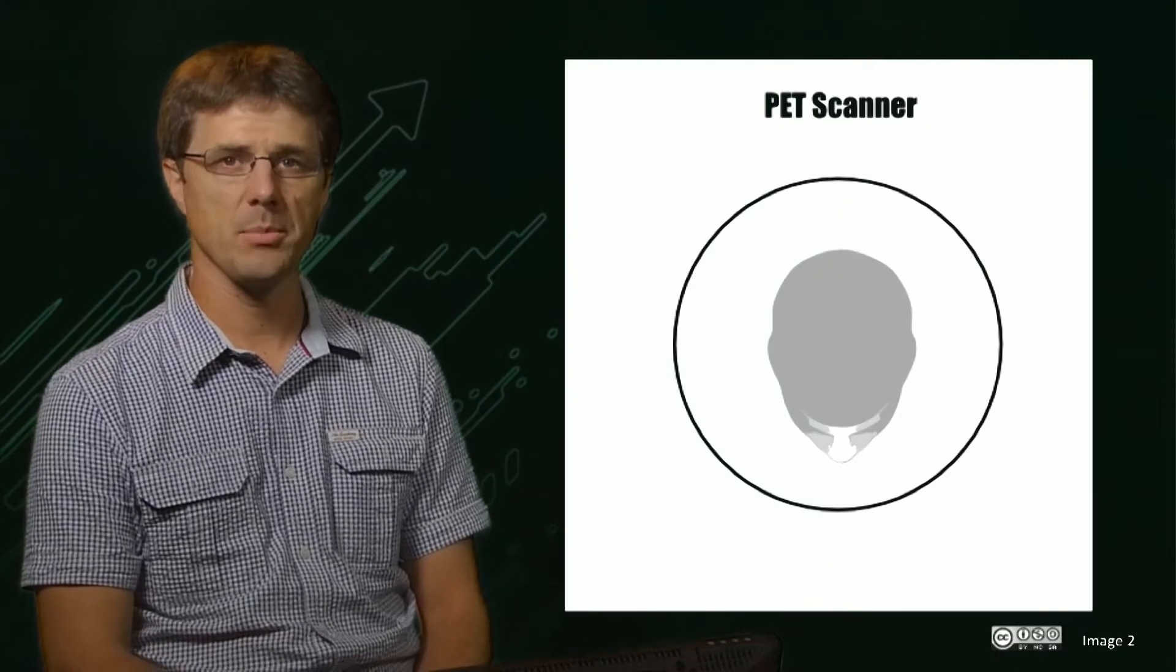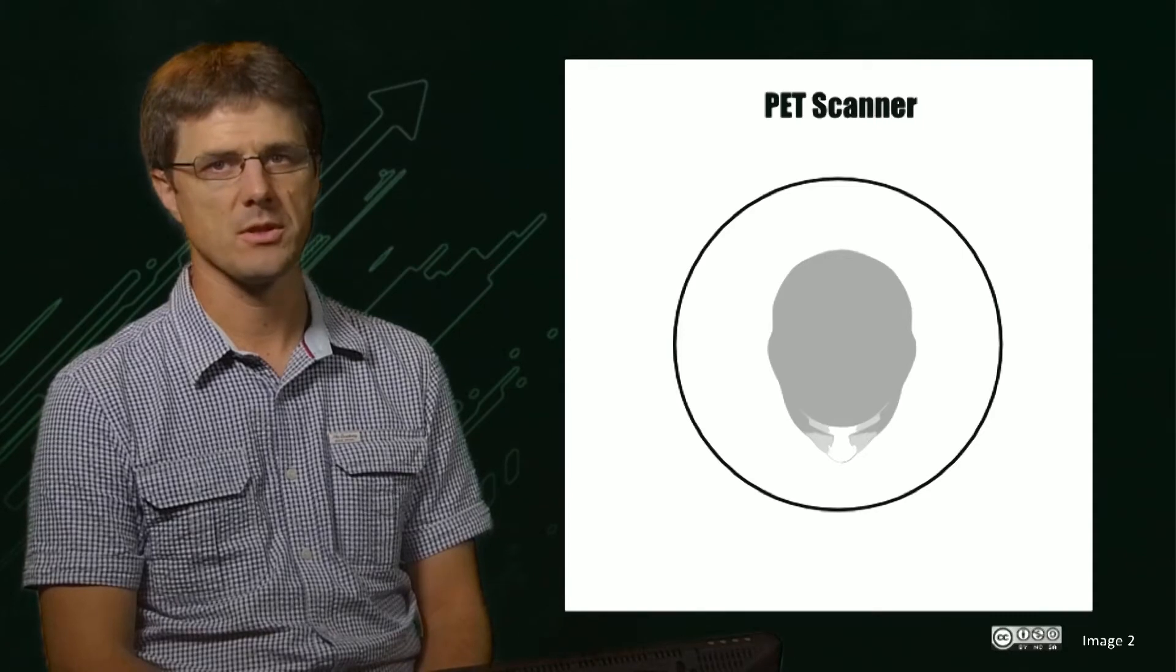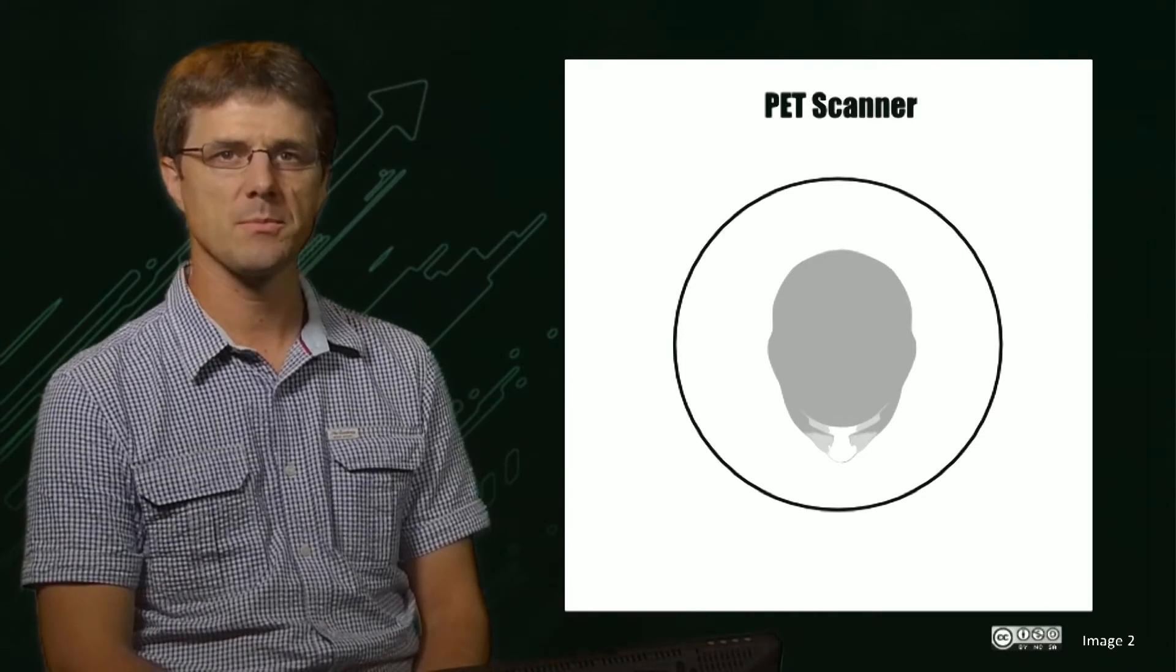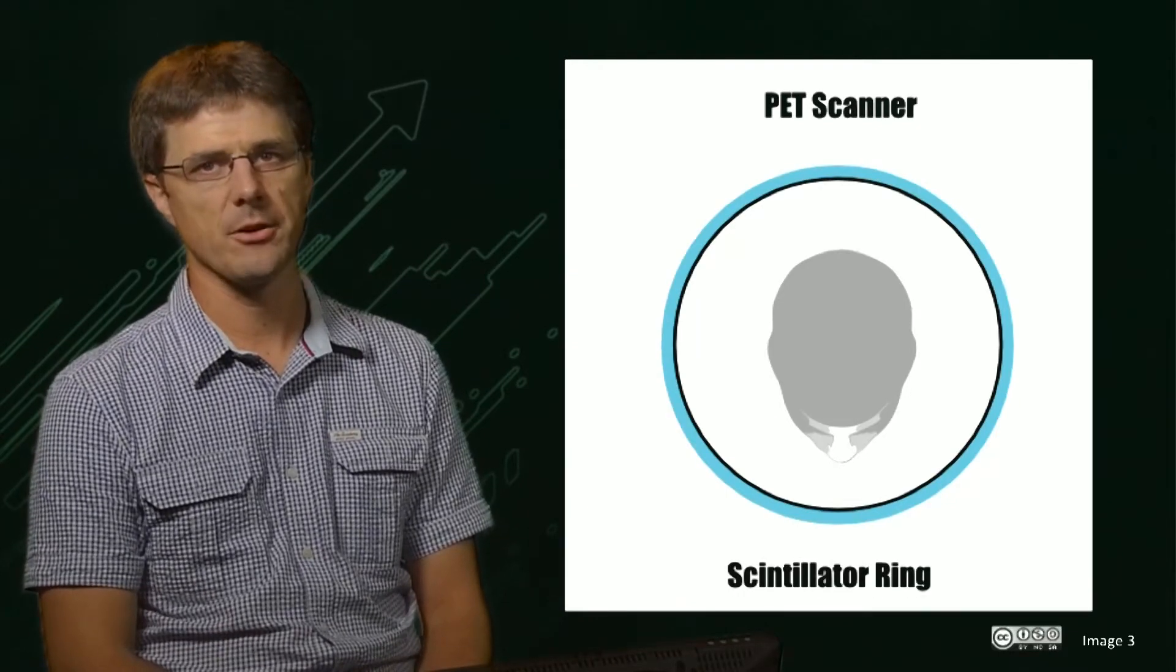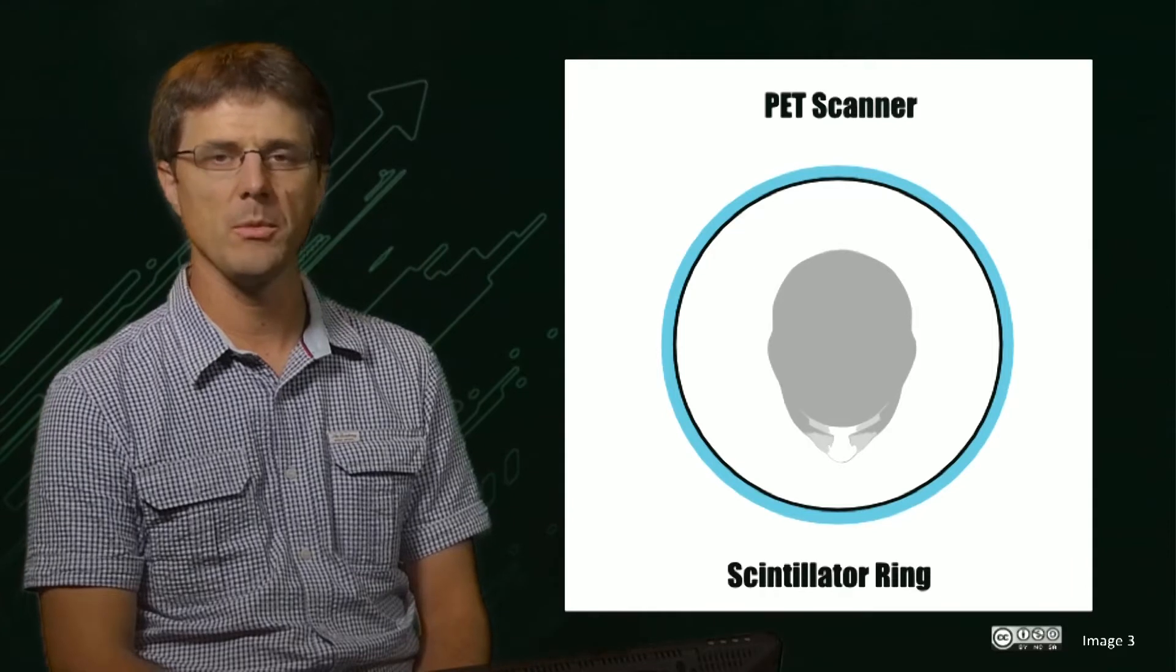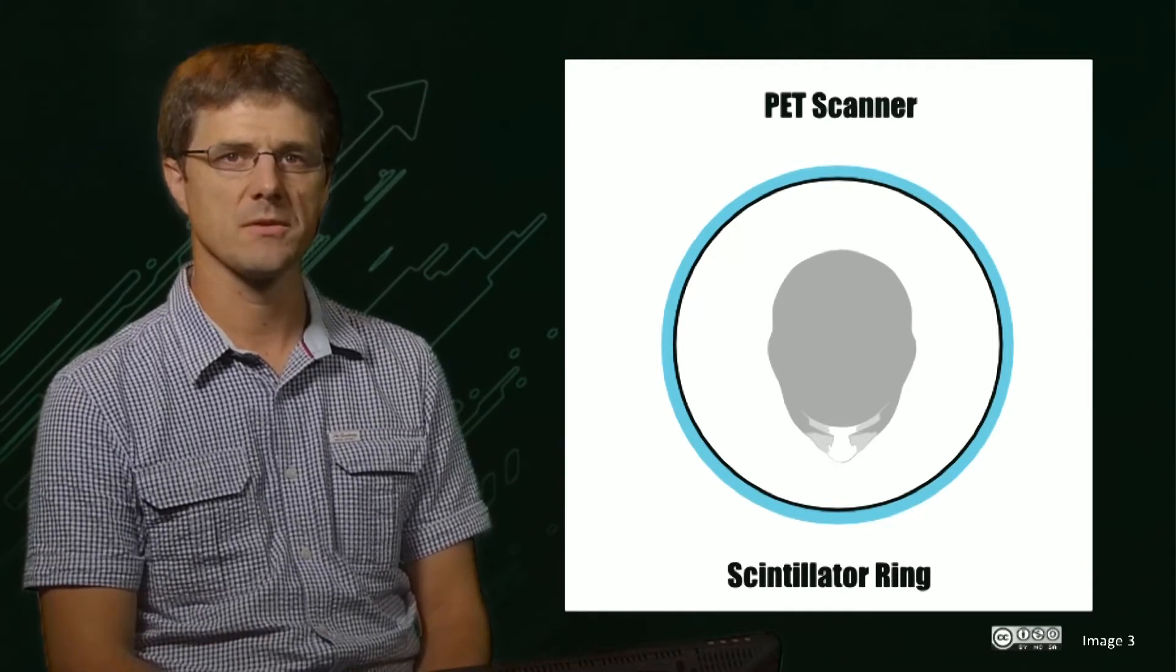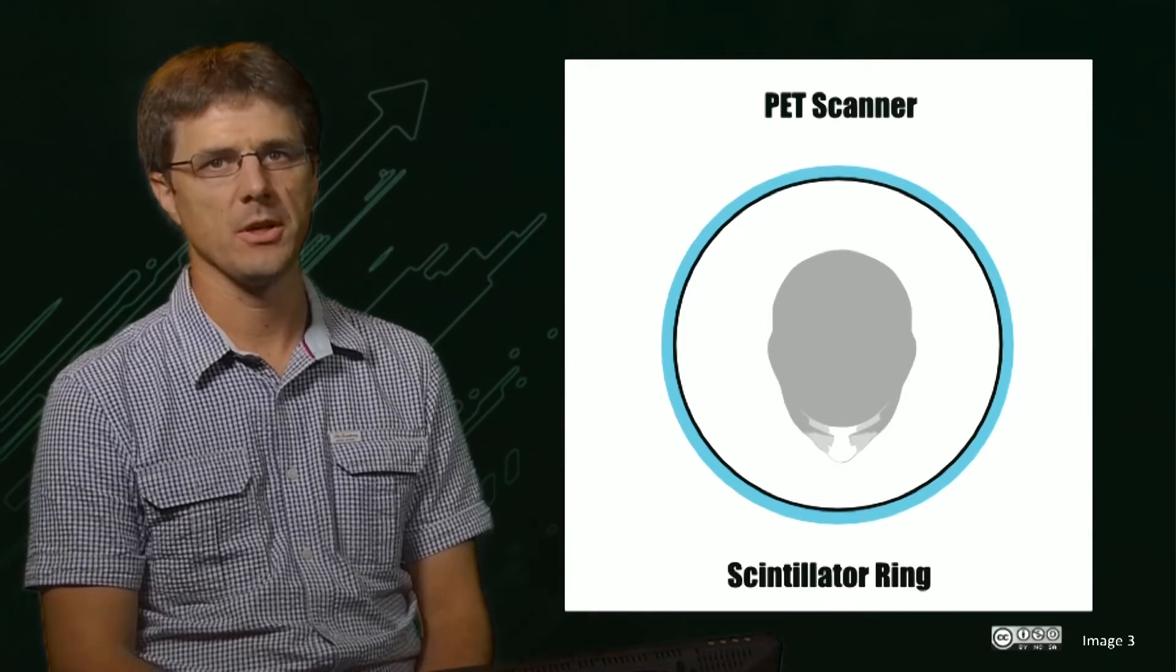In order to understand PET reconstruction, we first need to review the process by which the PET signal is acquired. In a PET system, the subject is placed in the scanner. The scanner's detector is called a scintillator ring and can detect extremely low signals. In PET's case, this signal consists of a single positron. In order to detect this, each detector element is quite large.